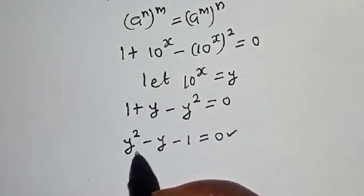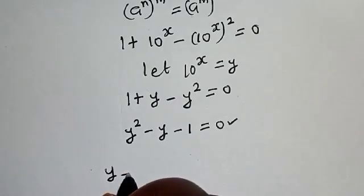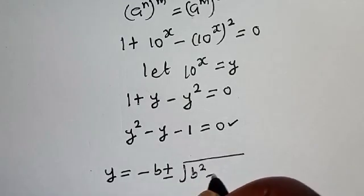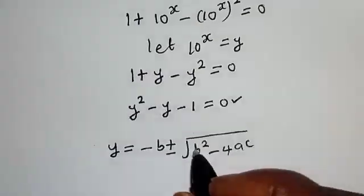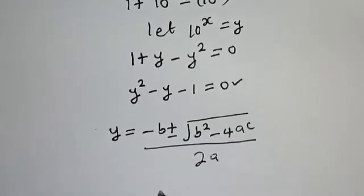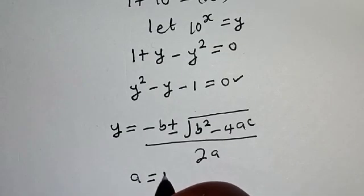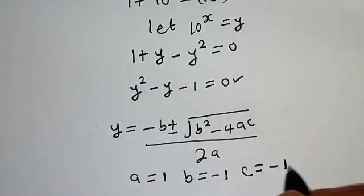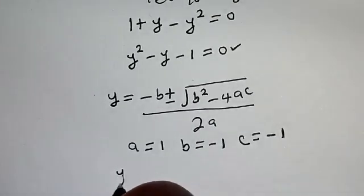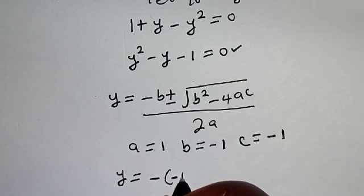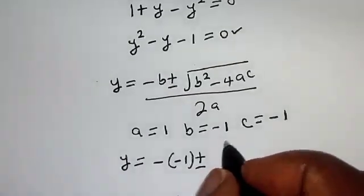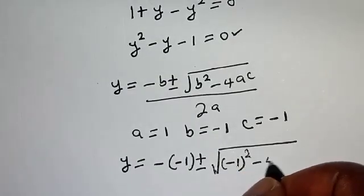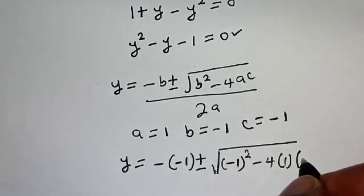The quadratic formula gives y equals negative b plus or minus square root of b squared minus 4ac, all over 2a. Here a equals 1, b equals negative 1, and c equals negative 1. Substituting: y equals negative(−1) plus or minus square root of (−1)^2 minus 4 times 1 times (−1), over 2 times 1.